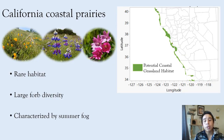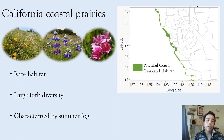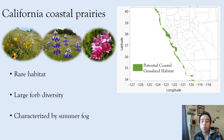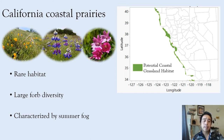California coastal prairies are a really rare type of habitat that exists within a very slim range of the coastal areas in California. California grasslands have already been reduced to 25 percent of their original extent, and native grasslands have been reduced to less than one percent. California coastal prairies make up only a very small portion of this one percent of existing native grasslands, but they're really important because they have one of the highest diversities of herbaceous grasslands in temperate North America, mostly due to a large number of forbs — both annual and perennial.